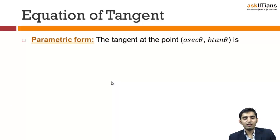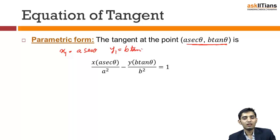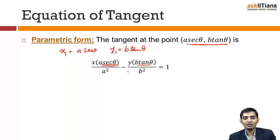Now, equation of tangent in parametric form. In this case, the parametric coordinates a-sec-theta comma b-tan-theta are given. To write down the equation of tangent at this point, instead of x1 and y1 I replace x1 by a-sec-theta and y1 by b-tan-theta. The equation of tangent in parametric form becomes: x over a times sec-theta minus y over b times tan-theta equal to 1. Just replace x1 y1 by the parametric coordinates and you get the equation of tangent in parametric form.